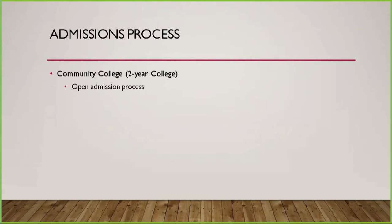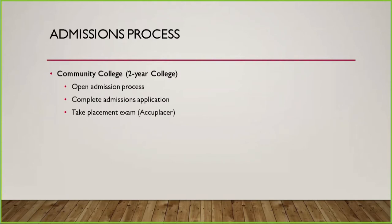The admissions application must be completed online, and it's free — before you had to pay $25, but now it's free. After you apply for admissions, you will take an Accuplacer to see your level in English and math. That will tell Montgomery College whether or not you have to take English 101 or other courses.